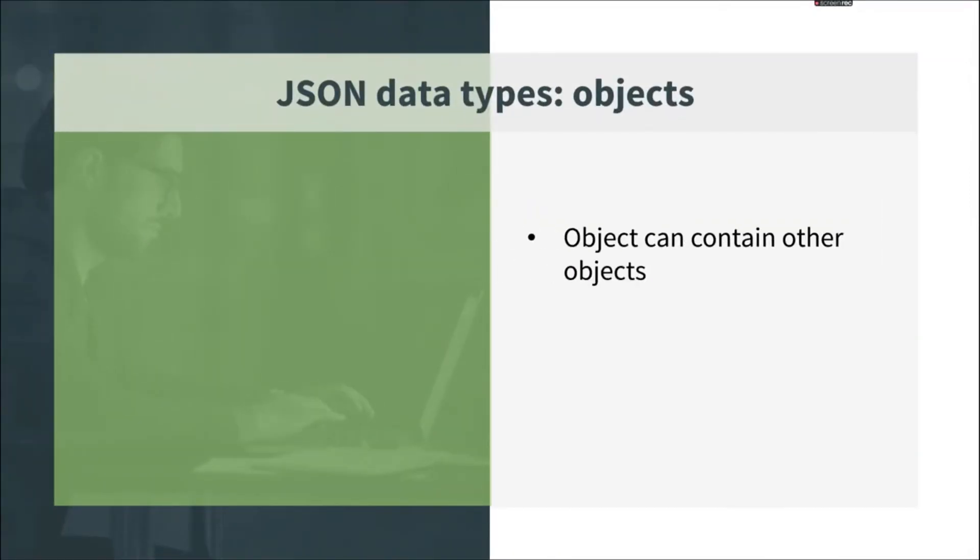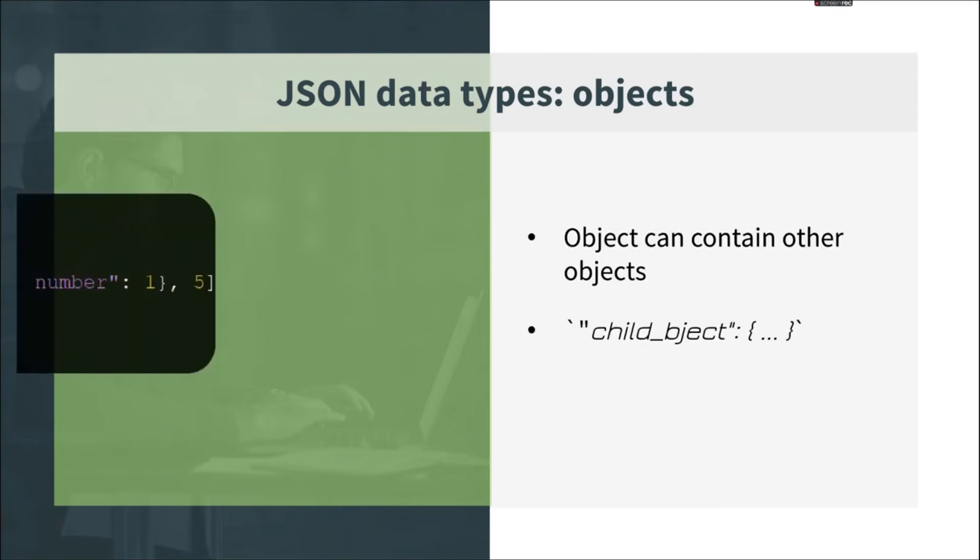Object can contain child objects. For example, in the following JSON object there is a child object which value is another object.